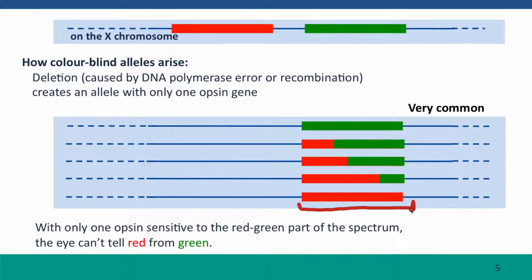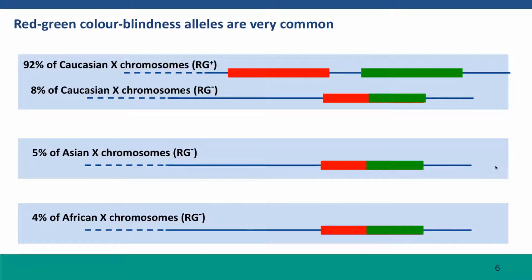And this means that the eye can't tell red from green. These mutations are quite common. In Caucasians, eight percent of X chromosomes have a red-green minus allele — it could be a hybrid allele, all red, or all green, but they only have one pigment where the normal allele has two. The numbers are slightly less in other populations: five percent of Asians and four percent of African X chromosomes have the defective red-green alleles.